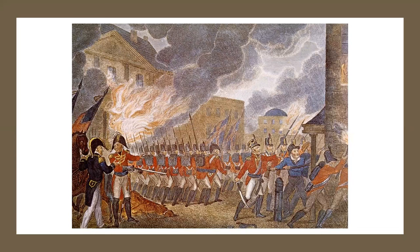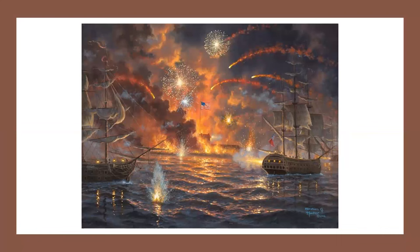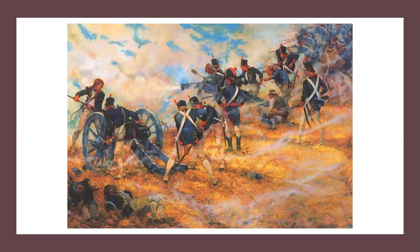Staying only two days in Washington, the British set out to attack Baltimore, the third largest city in America. In the previous year, the Americans had done much defensive work to protect the city, and Fort McHenry was Baltimore's main defense. On September 14, after three days of little military progress, the British withdrew from Baltimore. From this battle, Francis Scott Key wrote a poem called 'The Defense of Fort McHenry,' which later became the lyrics of the American national anthem, 'The Star-Spangled Banner.'